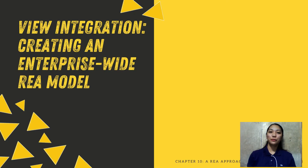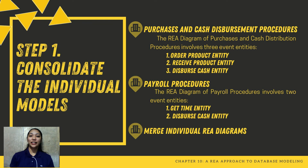And now let's welcome Ms. Maricar de la Cruz and Ms. Anjanine Zapata. This is Maricar, and I will be discussing the steps in creating an enterprise-wide REA model. For Step 1: consolidate the individual models. In this step, different procedures undertaken by the entity must be identified, such as purchase and cash disbursement procedures and payroll procedures. The event entities and resources involving each procedure must be noted and their associations determined in order to construct the structural flow of the model. Examples of event entities are ordering and receiving product and disbursement of cash. Upon completion and review of the individual REA models, they will be merged into a single entity-wide REA diagram.